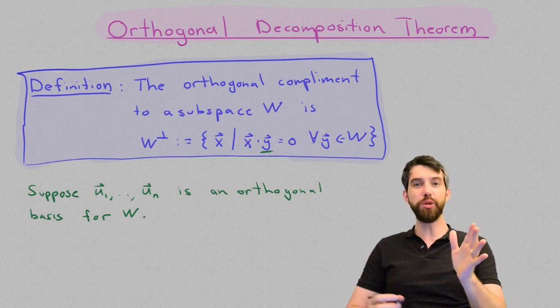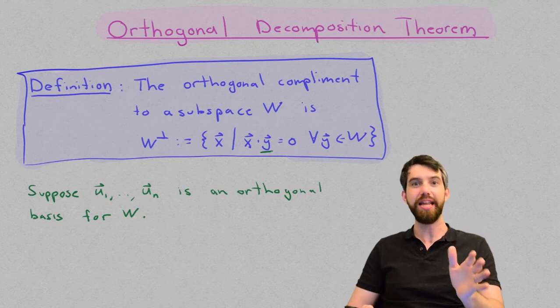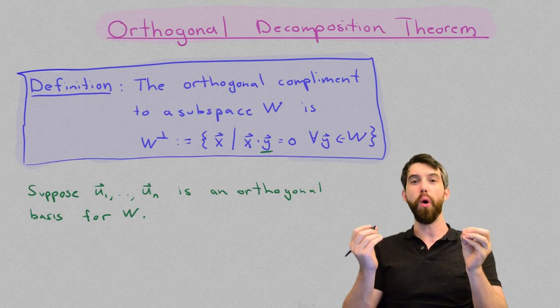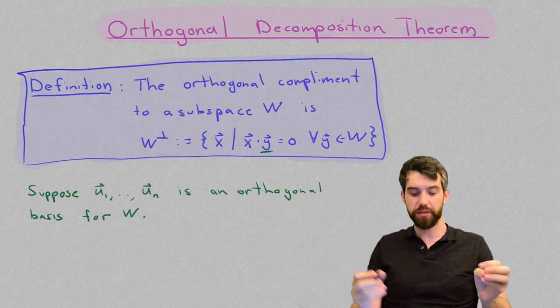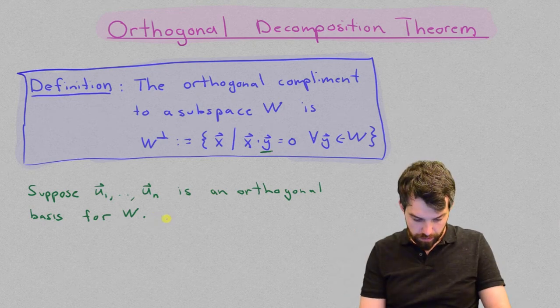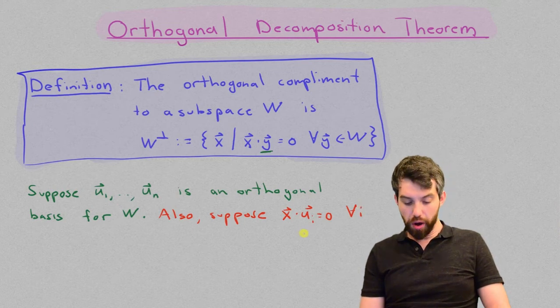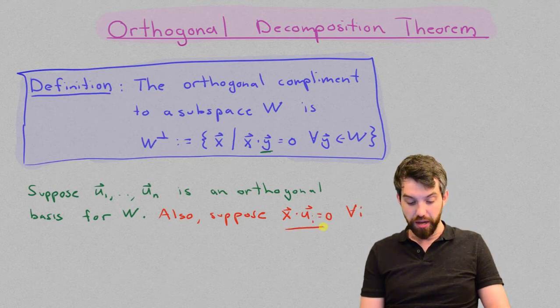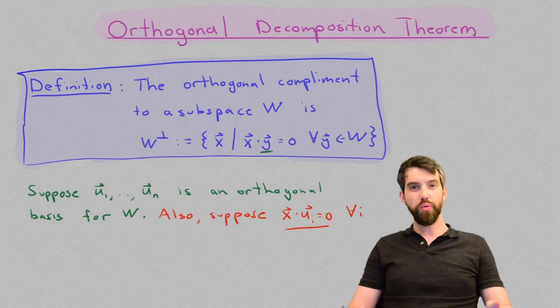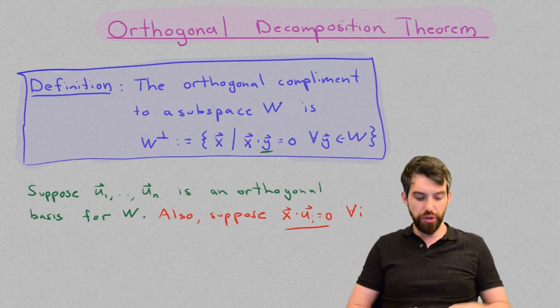So, let's suppose that condition instead, namely that our vector x is orthogonal to all of the orthogonal basis vectors. And here, I've written the orthogonality condition as a dot product where it's equal to 0. So, I'm going to claim that this is sufficient.